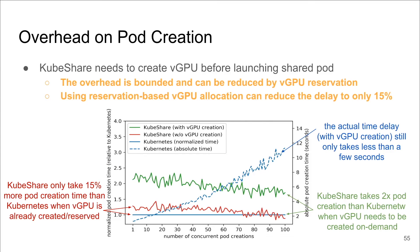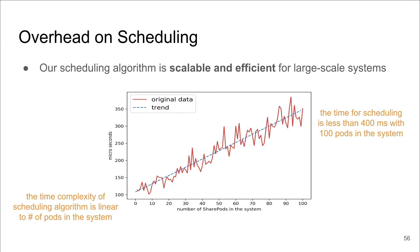Finally, we evaluate the overhead of GPU sharing. In the worst case, KubeShare needs to create a vGPU before creating a shared pod, so pod creation time can be doubled compared to native Kubernetes. But this overhead factor is constant regardless of how many pods are created simultaneously, and the actual overhead is only a few seconds even when creating 100 pods at the same time. With reservation-based vGPU allocation, the overhead is reduced to only 50%. For scheduling overhead, our algorithm has linear complexity with respect to the number of pods, and it took only 400 milliseconds to schedule 100 pods, showing that our implementation is scalable.